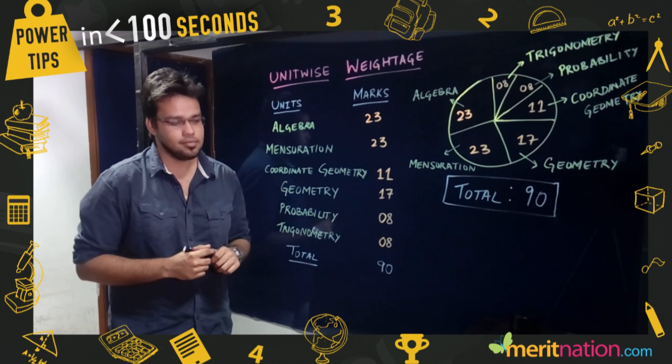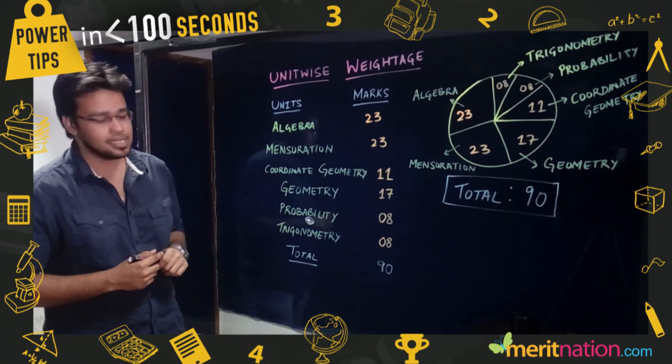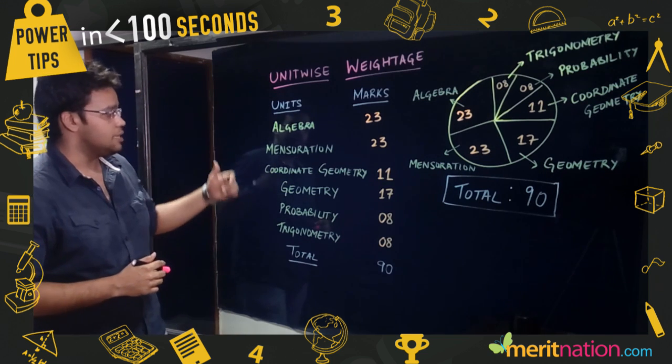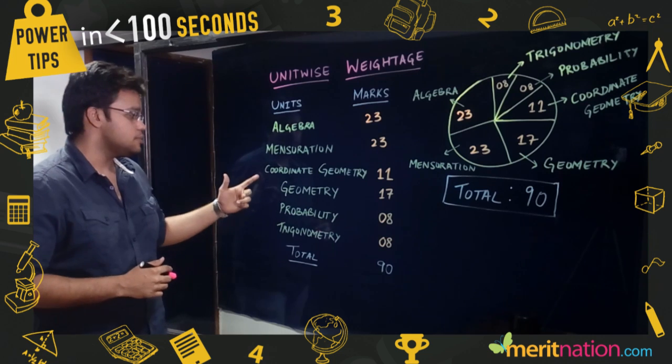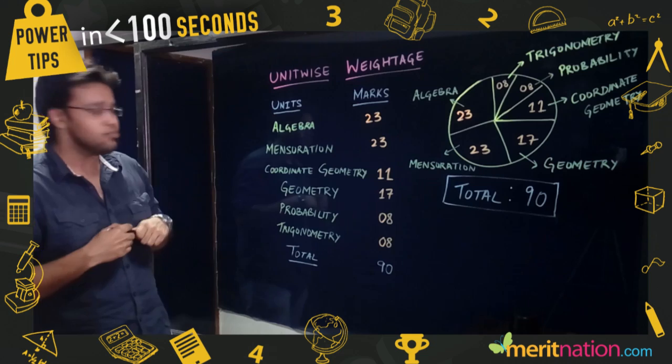Ankit sir, what's the marking scheme and pattern for maths board exam? Well, class 10 maths board exam comprises of six units: algebra, mensuration, coordinate geometry, geometry, probability, and trigonometry. Now out of the six units, I would say